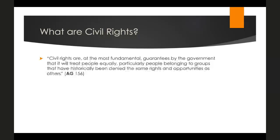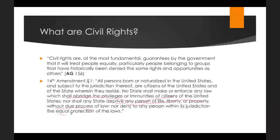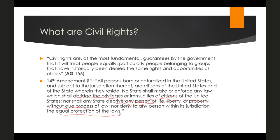We can see this in the first section of the 14th Amendment, ratified after the Civil War: all persons born or naturalized in the United States are citizens, and no state shall make or enforce any law which shall abridge the privileges and immunities of citizens, nor deprive any person of life, liberty, or property without due process, nor deny equal protection of its laws. Citizenship rights, due process, and equal protection are the hallmarks of civil rights.